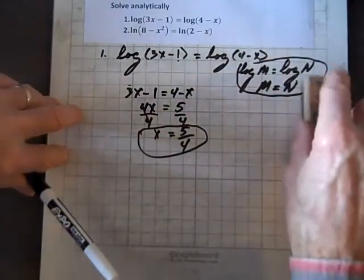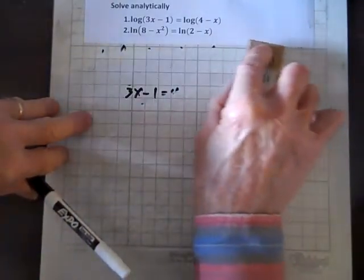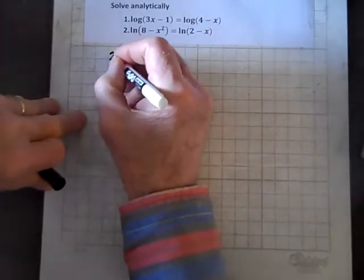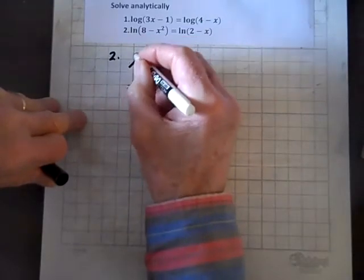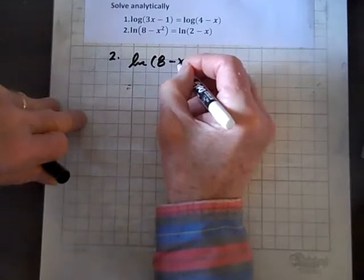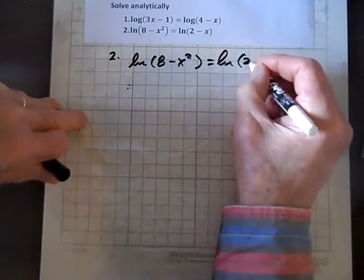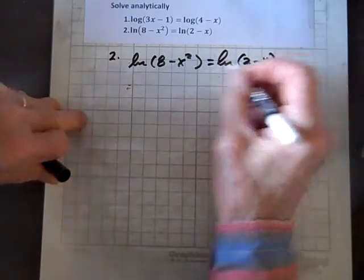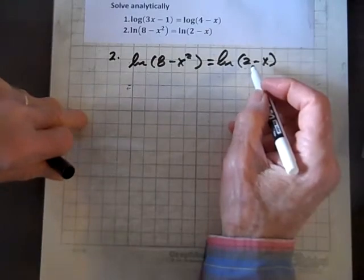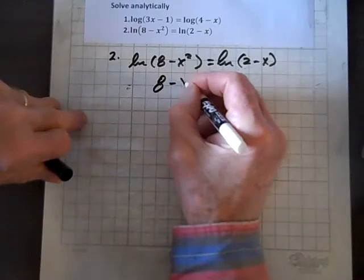Let's do the second one now. So number 2, ln of 8 minus x squared equals ln of 2 minus x. And again, we have the log of m equals the log of n, so m must equal n, so we can equate these two results.